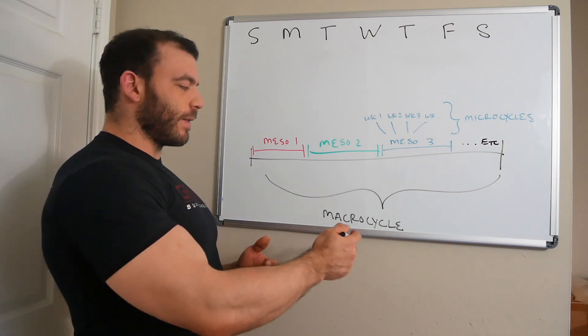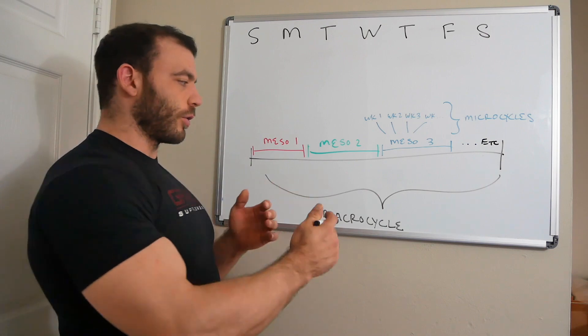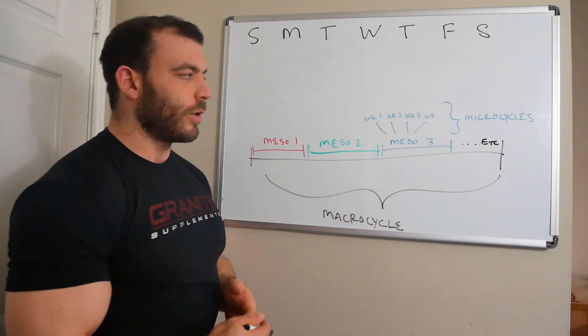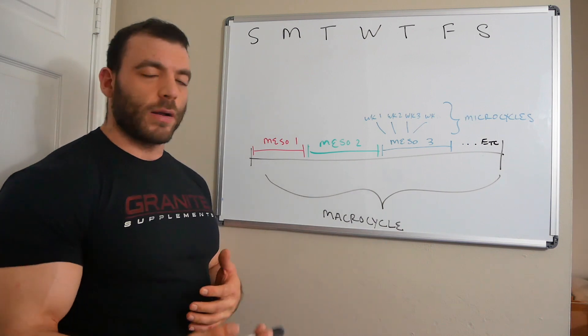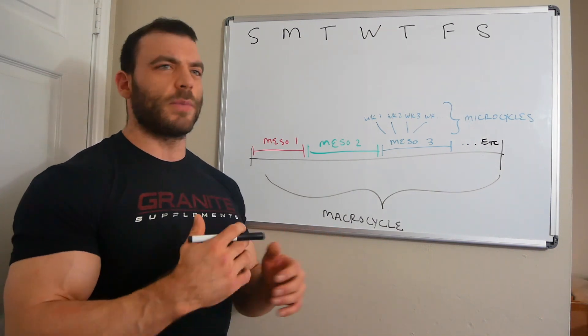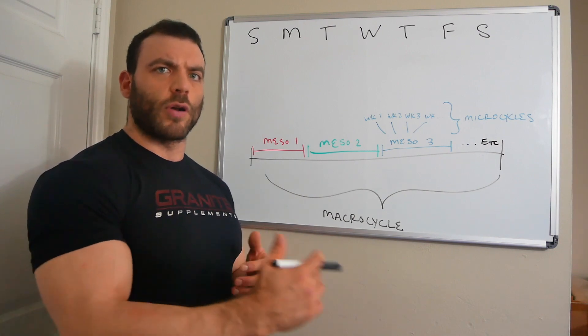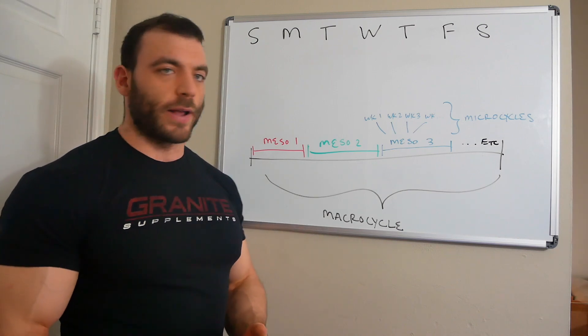For a lot of different athletes, a macro cycle can be very long. If you're an Olympic athlete, your long term - think of this as your long term goals - your long term goals are your Olympics, that's a 4 year time span. For powerlifting it's generally not quite so long. As long as you have some type of idea in mind for your long term goal, that's enough. You can really focus on these mesocycles, which is what people usually do.